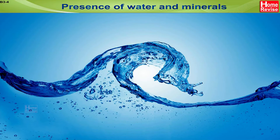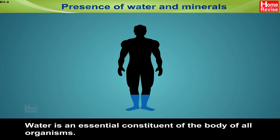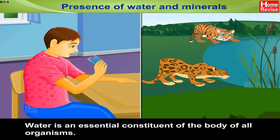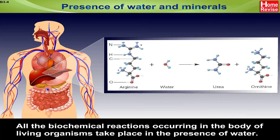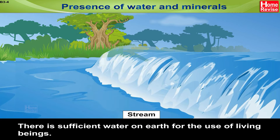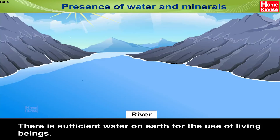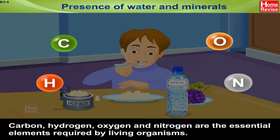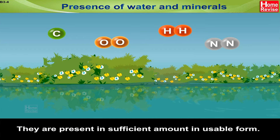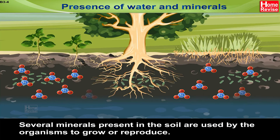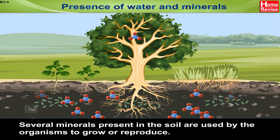Presence of water and minerals: Water is an essential constituent of the body of all organisms. All the biochemical reactions occurring in the body of living organisms take place in the presence of water. There is sufficient water on Earth for the use of living beings. Carbon, hydrogen, oxygen, and nitrogen are the essential elements required by living organisms, present in sufficient amounts in usable form. Several minerals present in the soil are used by organisms to grow or reproduce.